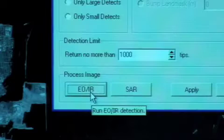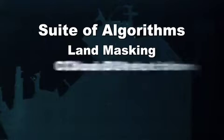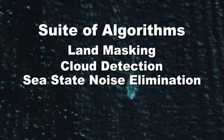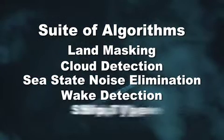With the press of a button, the Rapier Ship Detection System automatically processes an image using a suite of algorithms. These algorithms work in the background to detect and classify ships.